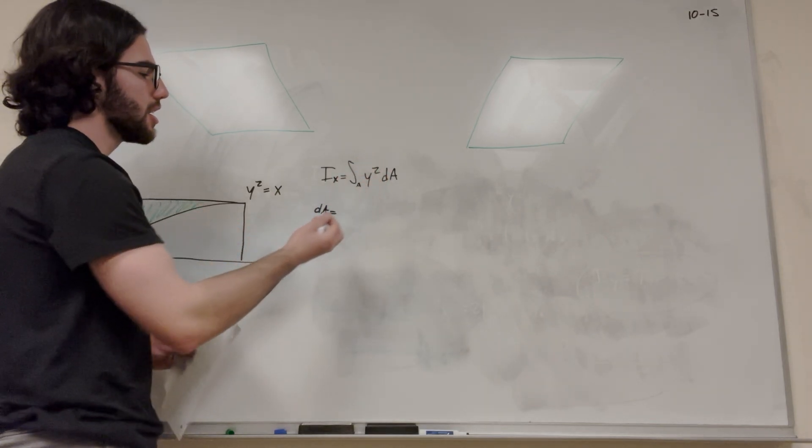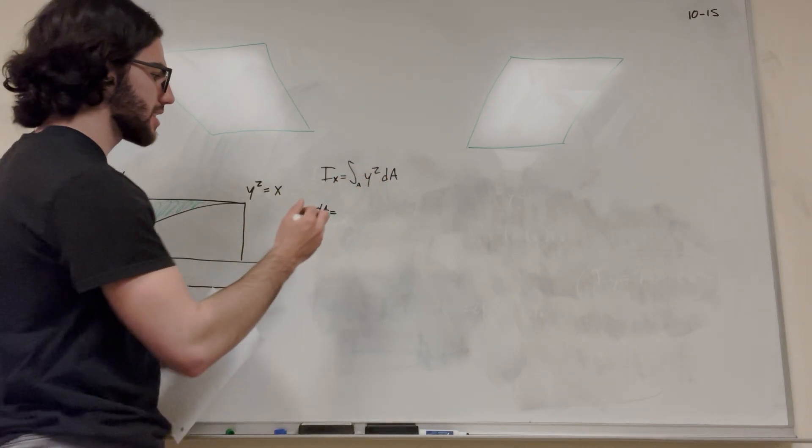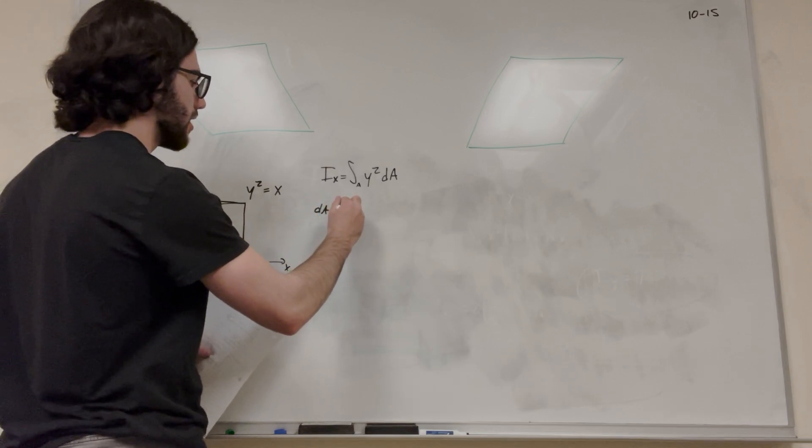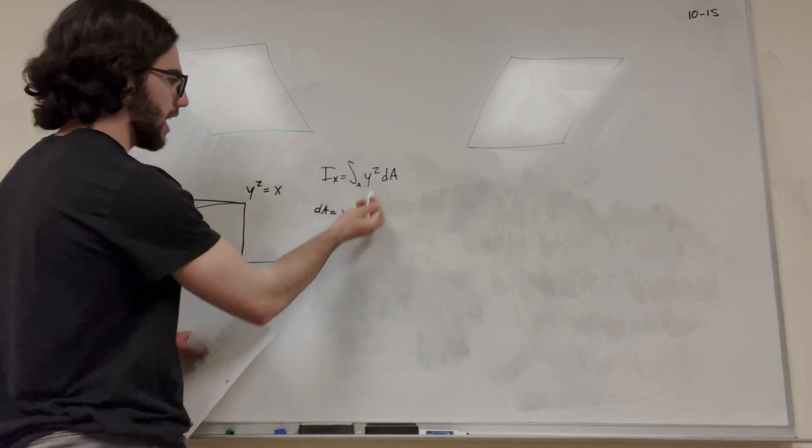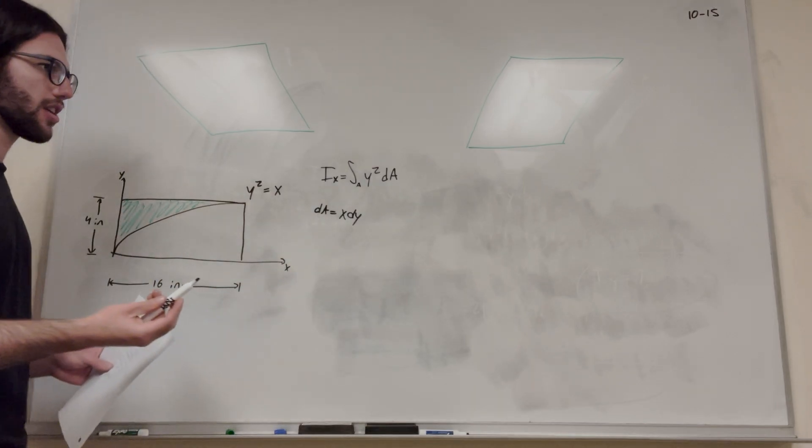In this case here, we have this y squared, so it's going to be easier if we do x dy. We want the dy to match the y squared here so we can integrate with respect to y, which we already have.